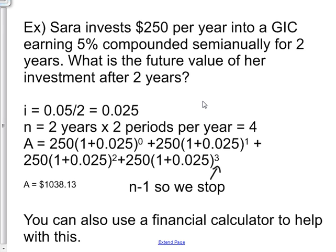Sara invests $250 per year into a GIC earning 5% compounded semi-annually, so twice per year, for 2 years. What is the future value of her investment after 2 years?